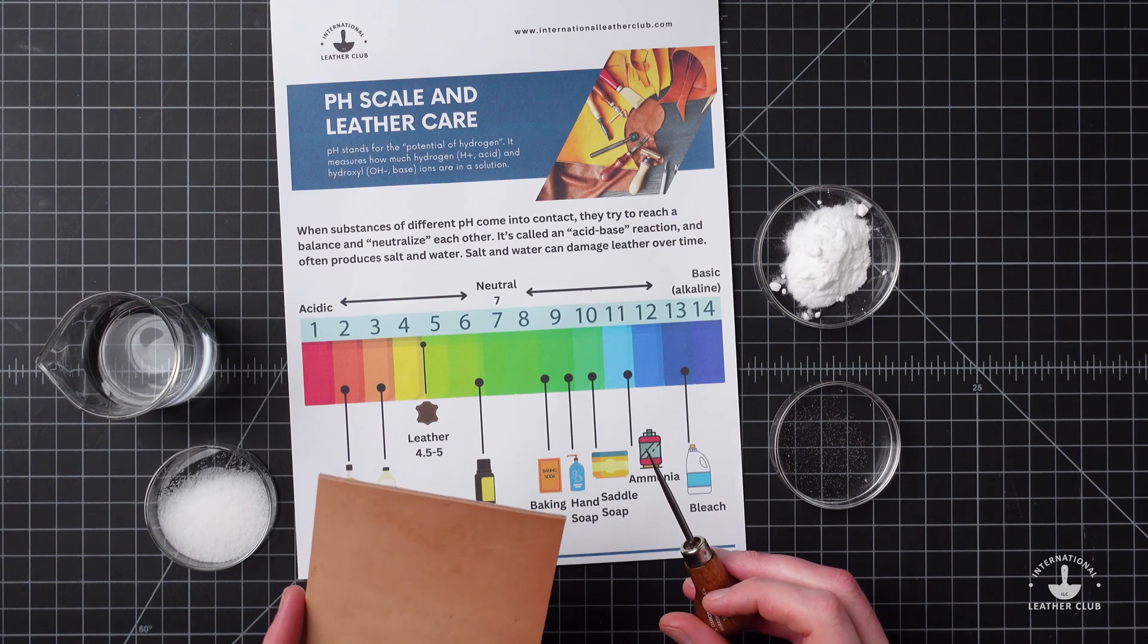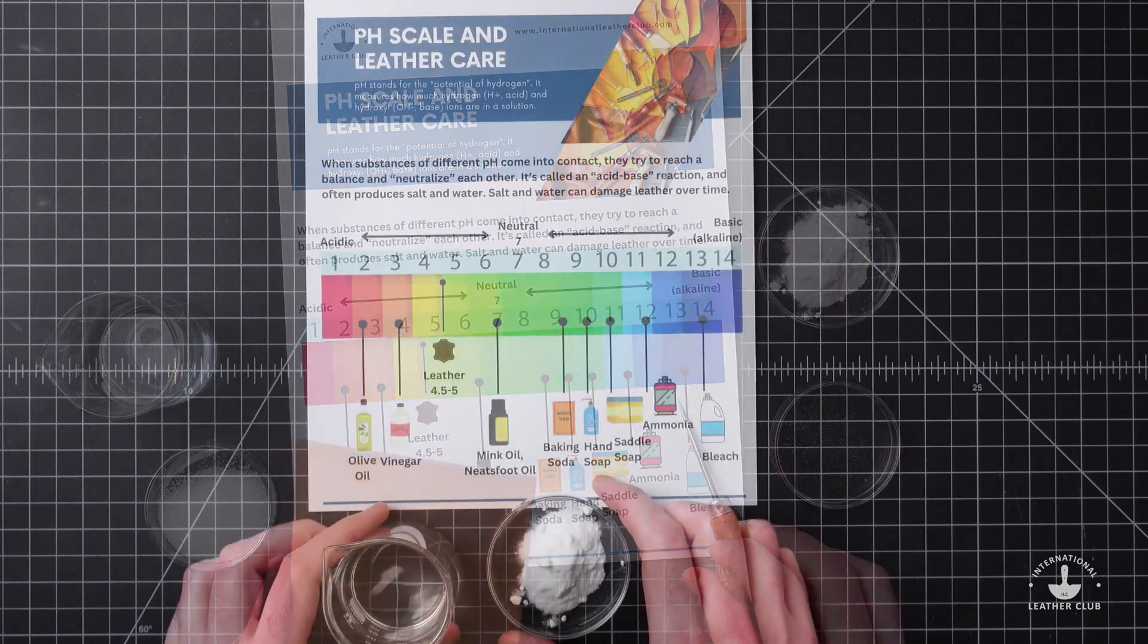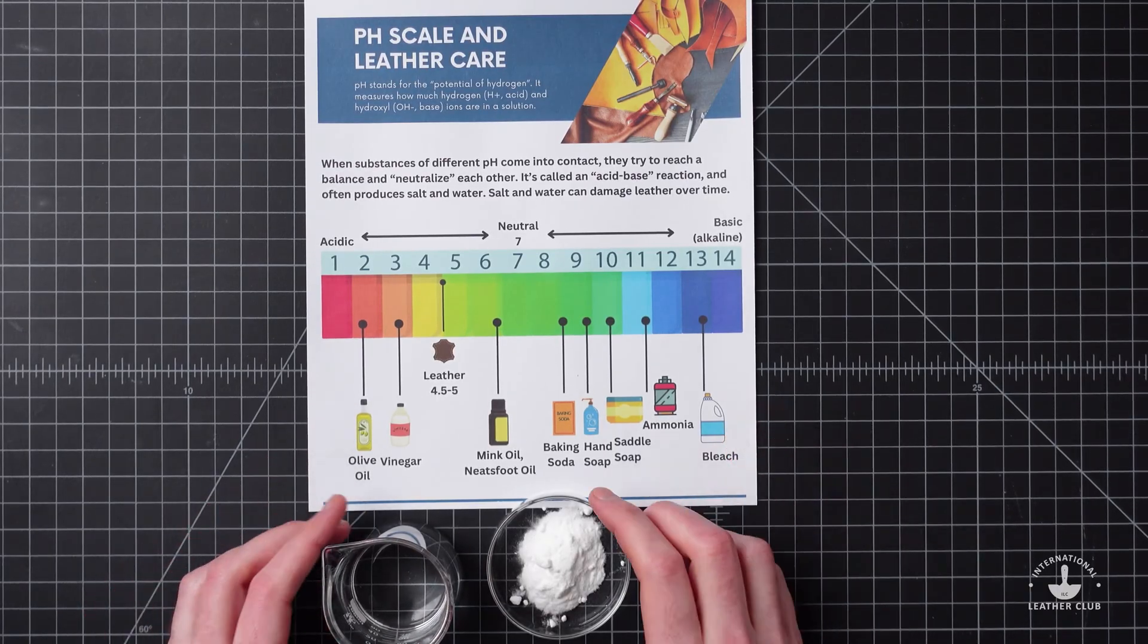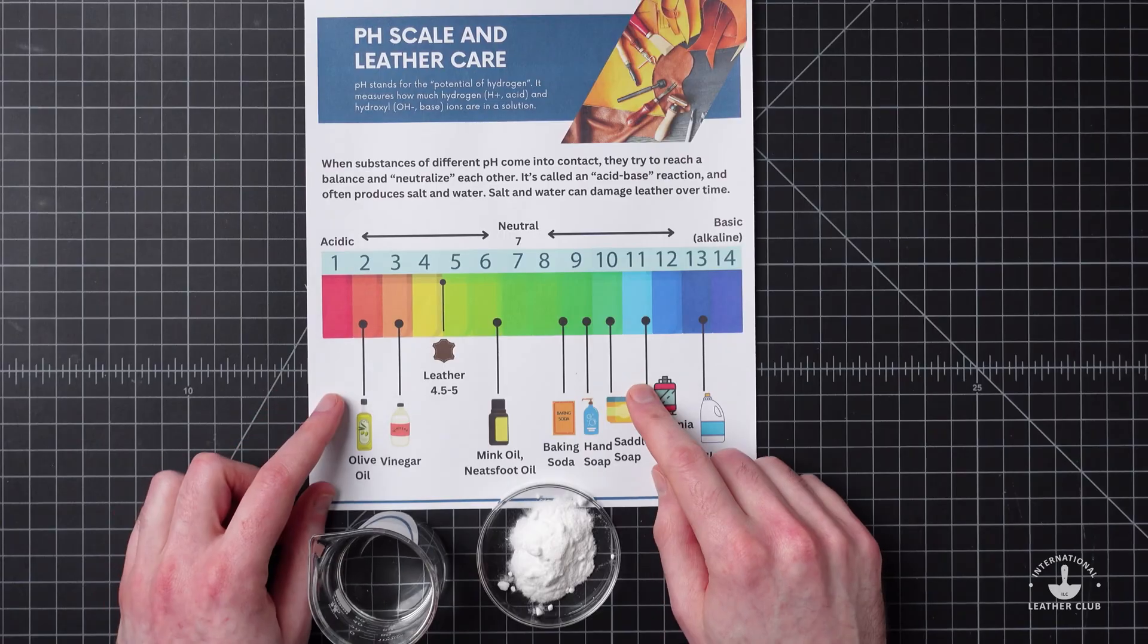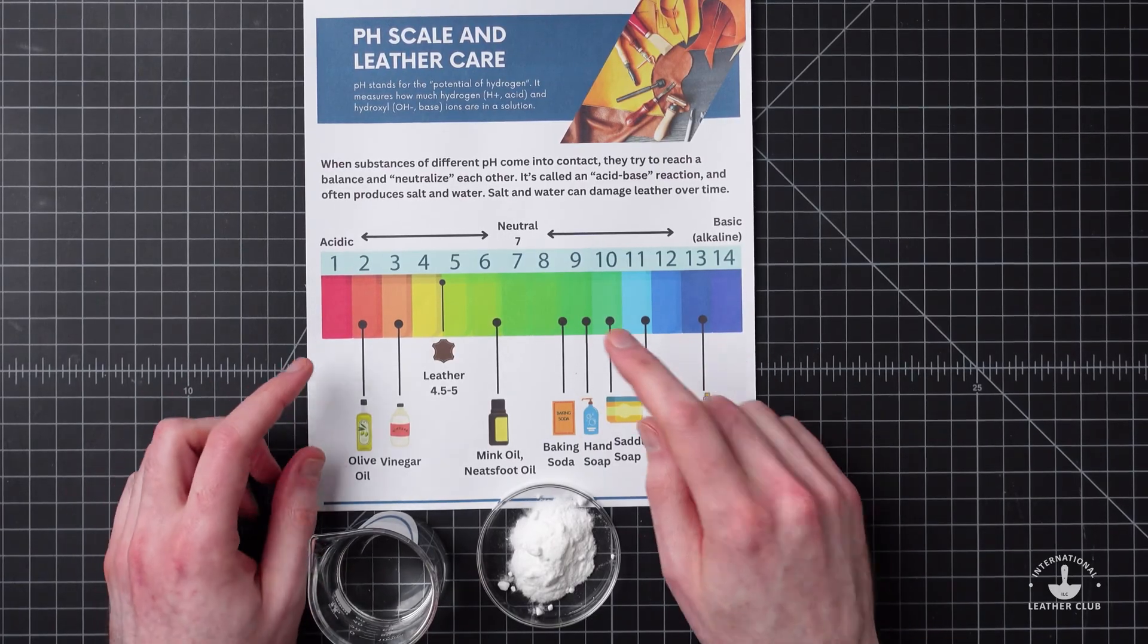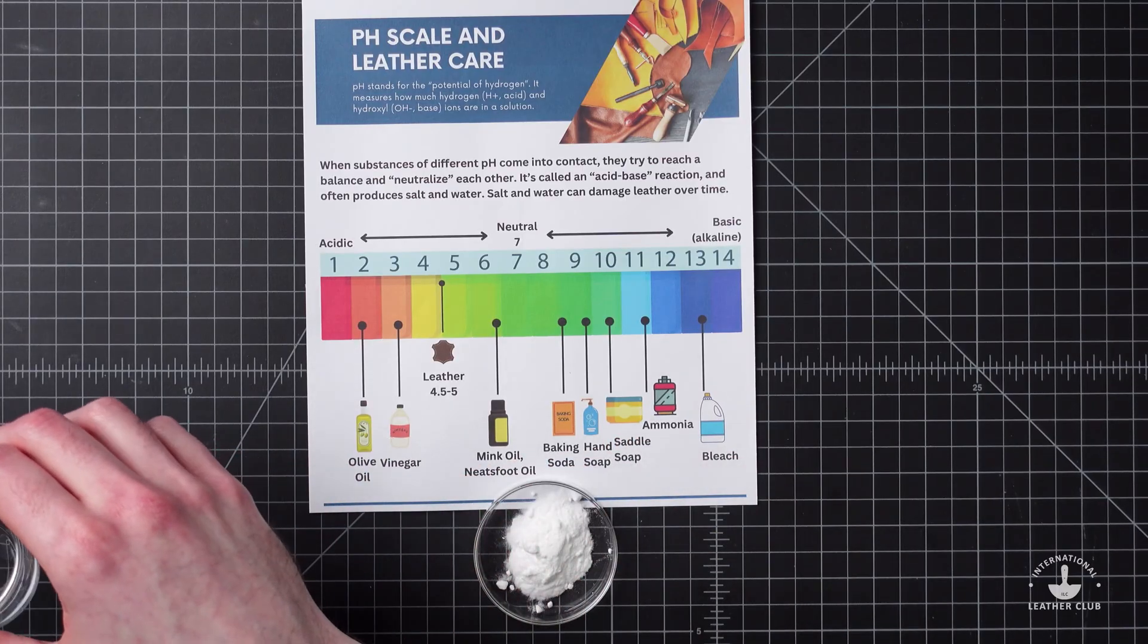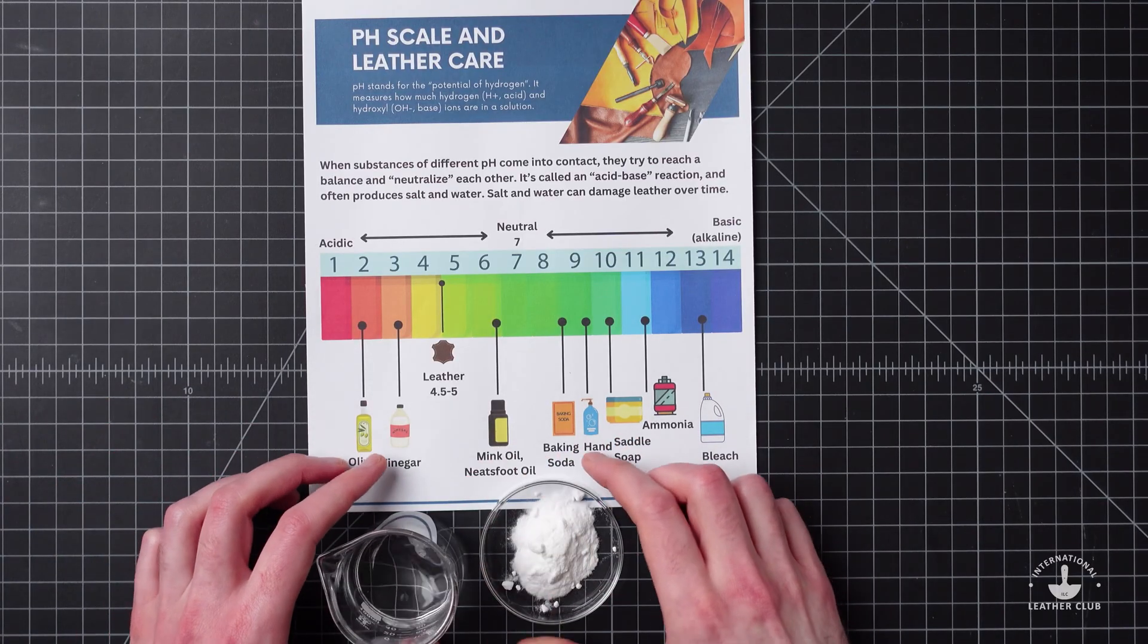Nerd glasses off, cool hats on. Here's an experiment you've probably seen before - this is a really fun one. Here we have vinegar, which is an acid with a pH of around 3, and then we're going to have baking soda, which is a base with a pH of around 9.